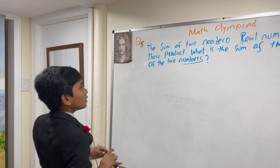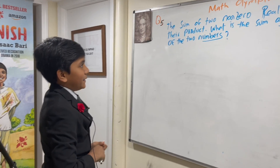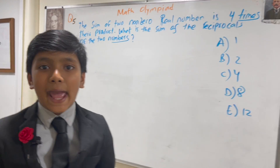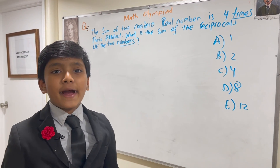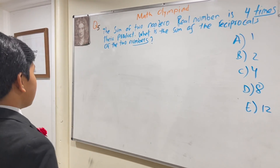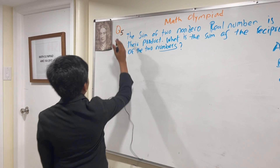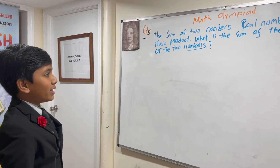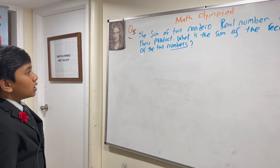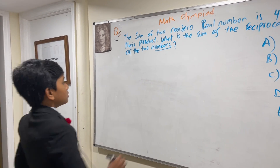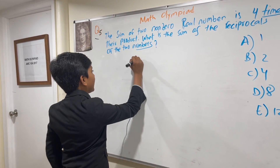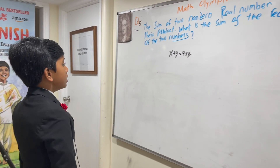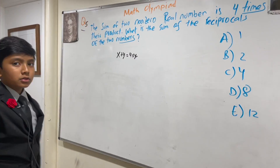Today we're going to be doing some more math olympiad AMC problems. Right now we're on question 5. The sum of two real numbers is 4 times their product — let's call them X and Y. What is the sum of the reciprocals of the two numbers?